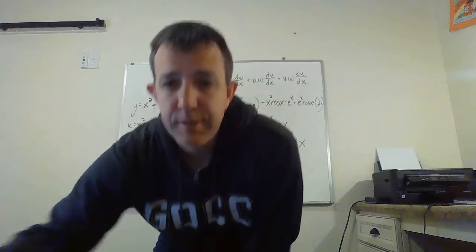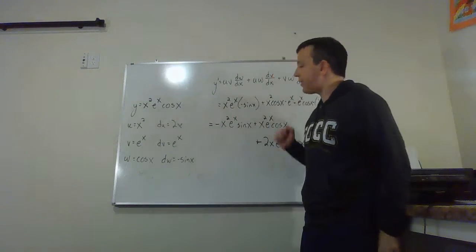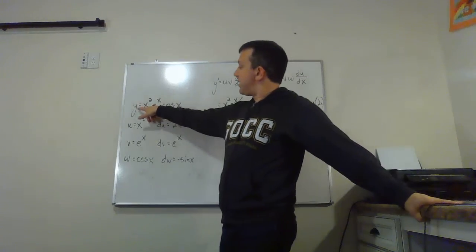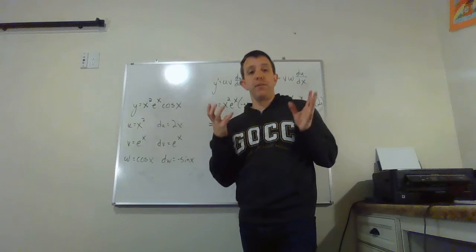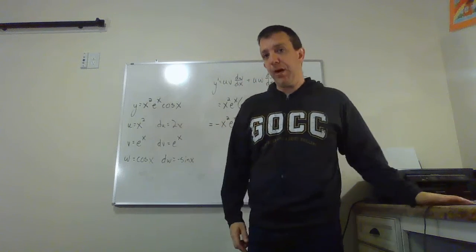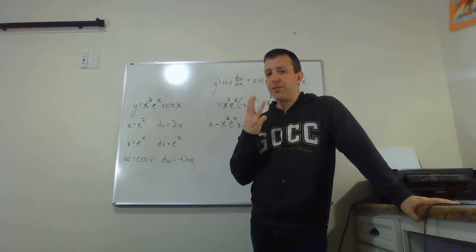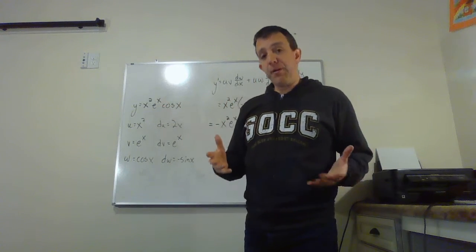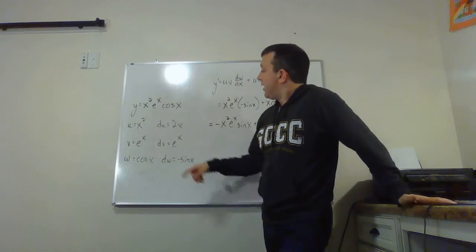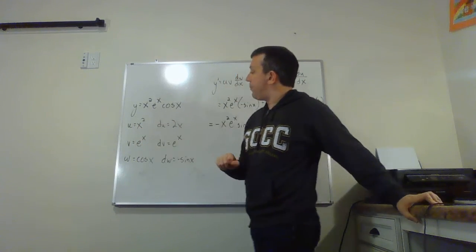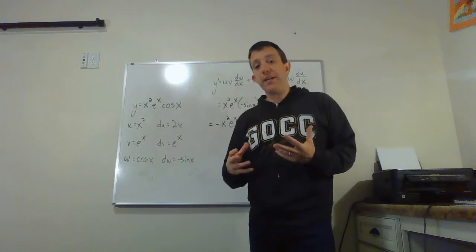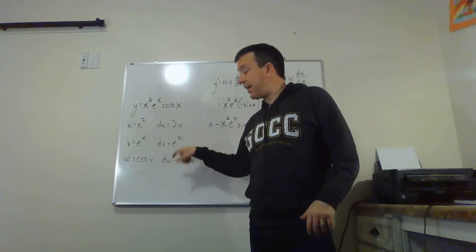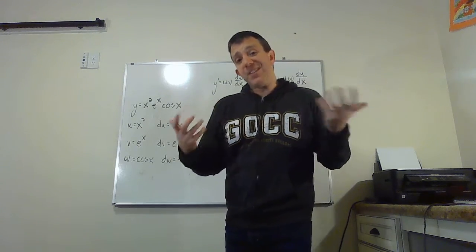Here's my next example: y is equal to x² eˣ cos x. This time there's no addition or subtraction — it's one big product. Notice it has three parts: x², eˣ, and cos x. We have a souped-up product rule to work with. I identified them as u, v, and w. Staying organized and identifying the pieces and their derivatives first makes it much easier to piece together the result.